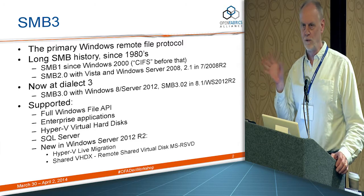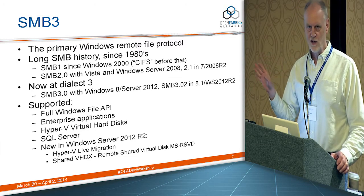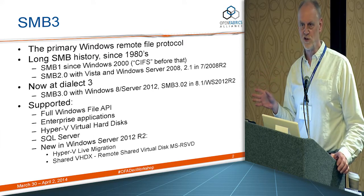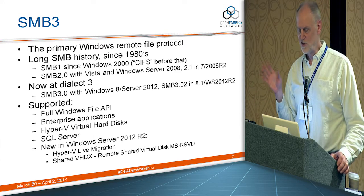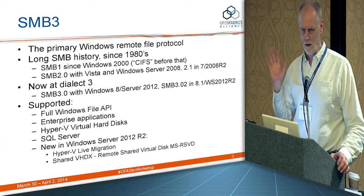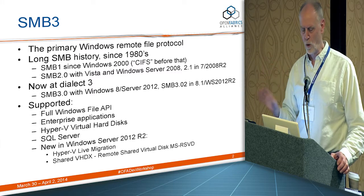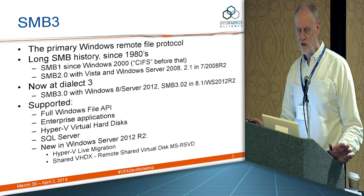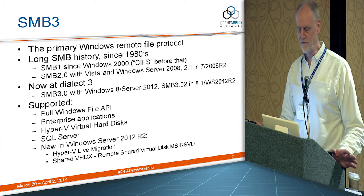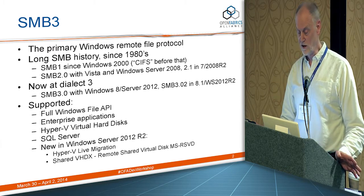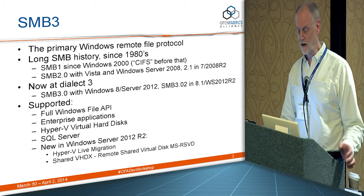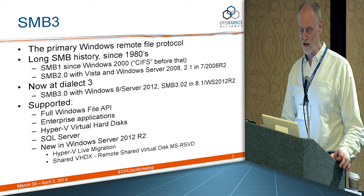SMB in general is really the primary Windows remote protocol. It has a long history in Windows since the 1980s. It was SMB1 in the Windows 2000 era and CIFS before that. The thing that a lot of people call CIFS is what we today call SMB1. SMB 2.0, the current version of the protocol, was greatly overhauled in the 2006 to 2008 timeframe and shipped with Vista and Windows Server 2008. And 2.1 was updated to another dialect in Windows 7 and 2008 R2.